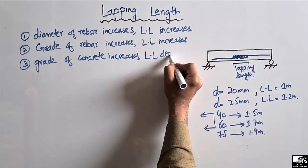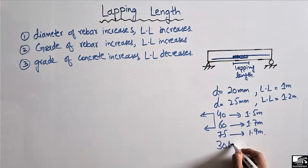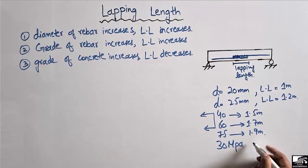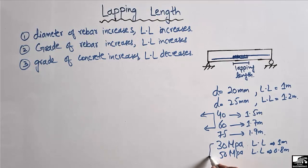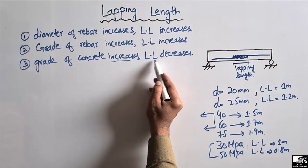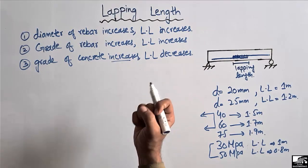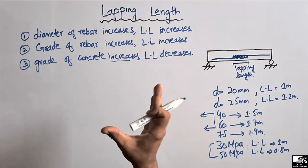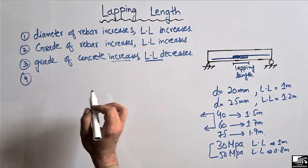The third factor is the grade of concrete. If the grade of concrete increases, the lapping length decreases — it is inversely proportional to the grade of concrete. For example, using 30 MPa concrete may require a lapping length of 1 meter, while using 50 MPa concrete may only need 0.8 meters. Higher concrete strength provides higher bond connection between the steel and concrete, so we can decrease the lapping length.